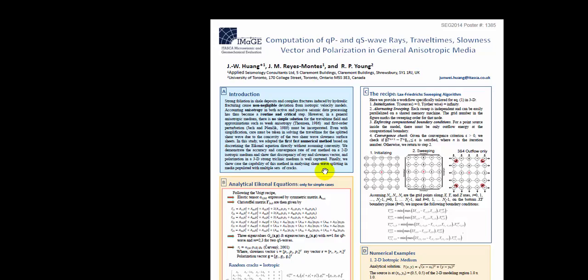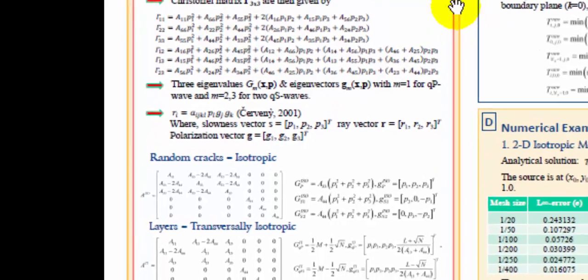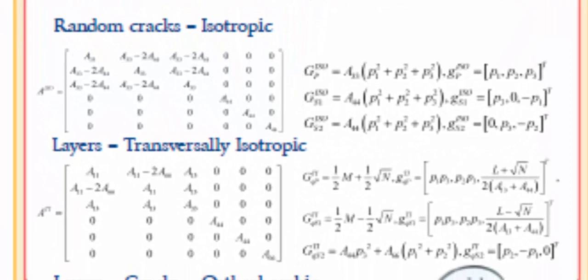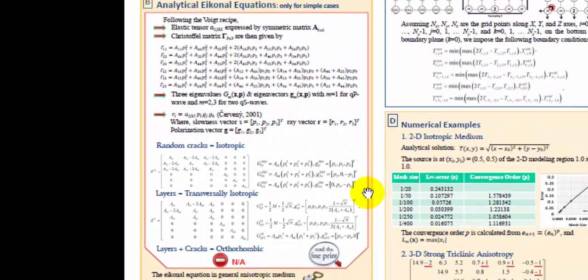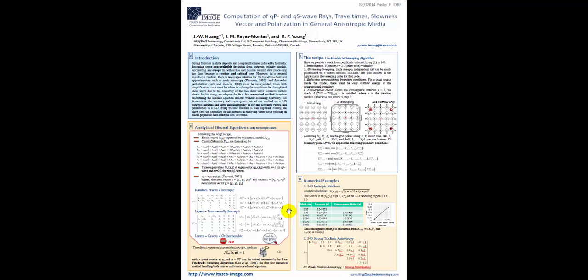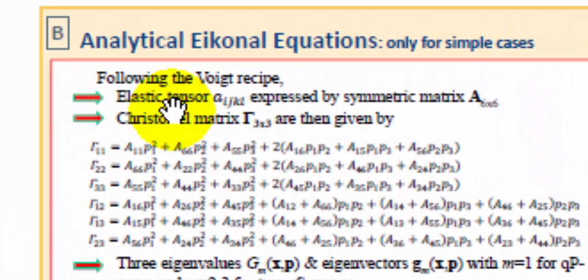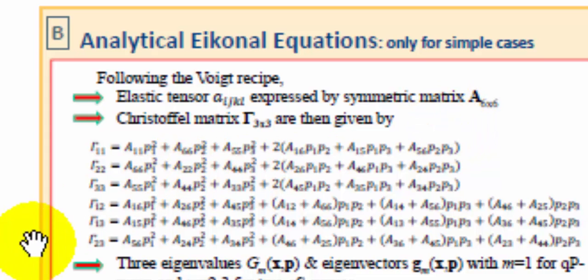These techniques can be applied to both P and S wave. The exact analytic expression for the Eikonal equation only exists for isotropic and transversal isotropic media. The benefit of having an analytical expression of the Eikonal equation is that we can directly discretize it and then solve for the travel time field. The elastic tensor, which is a fourth-order tensor, can be expressed by a second-order tensor as a six-by-six symmetric matrix. And then the Christoffel matrix, a three-by-three, can be expressed in terms of the slowness vector P1, P2, and P3.